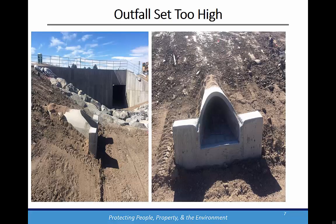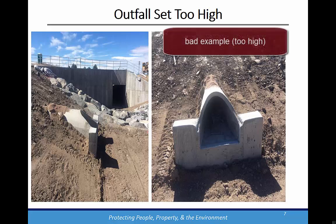Here, the outfall and cutoff wall were set too high and penetrate too far into the receiving channel. The invert is too high above the buried soil riprap and the toe wall and flared end section will act as a hydraulic obstruction to channel flows.